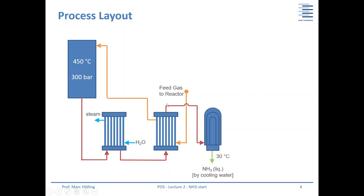Then the gas is sent to a condenser using cooling water, cooled down to 30 degrees Celsius. At the high pressure level of nearly 300 bars, a large amount of ammonia can already be separated here. Since ammonia is being removed at this point, material must also be added to the process — you cannot only remove without also inserting something.